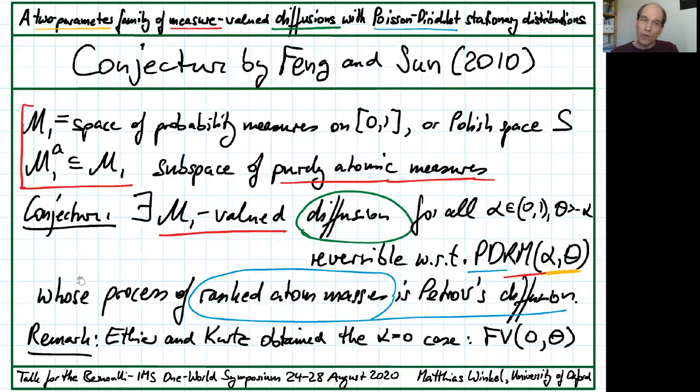Now, measure-valued version can be made precise by requiring that the induced process that just captures ranked atom sizes is Petrov's diffusion. The alpha equal to 0 case already existed. They are Fleming-Viot processes. Their Poisson-Dirichlet stationary distribution was established by Ethier-Kurtz. That's Poisson-Dirichlet 0-theta.